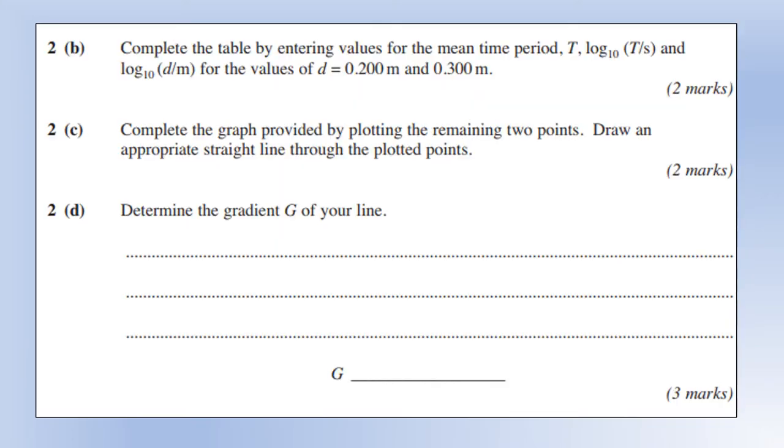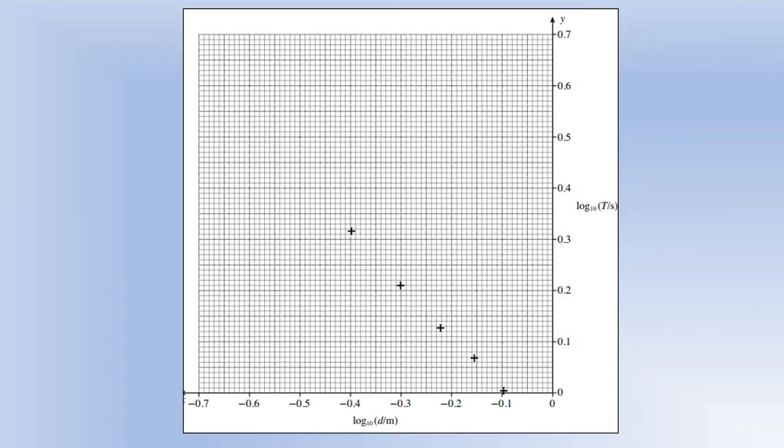So next, what we're going to do is complete the graph by plotting those points and determine the gradient. So let's go to the graph. So we've just calculated values of log t and log d. The first one should be around here. The next one should be around here. And general guidance for these exam questions is you usually have to be within a millimeter of the correct location. So you do have to be pretty precise when you're doing this plotting.